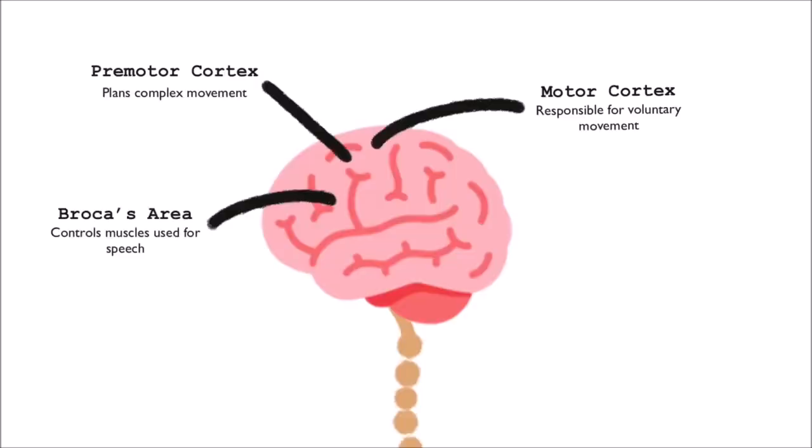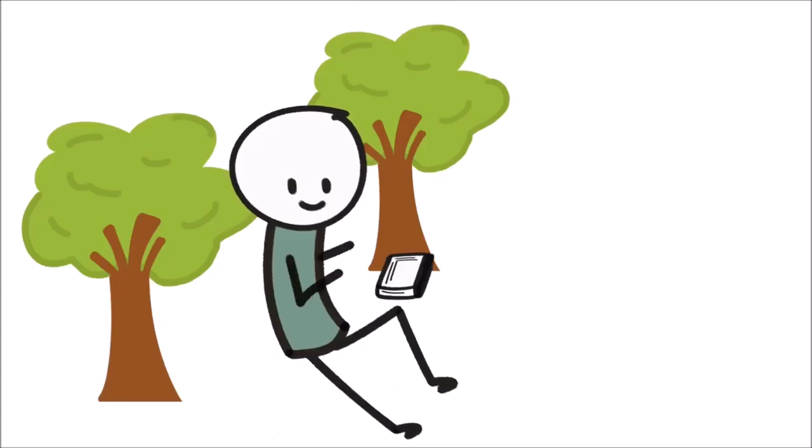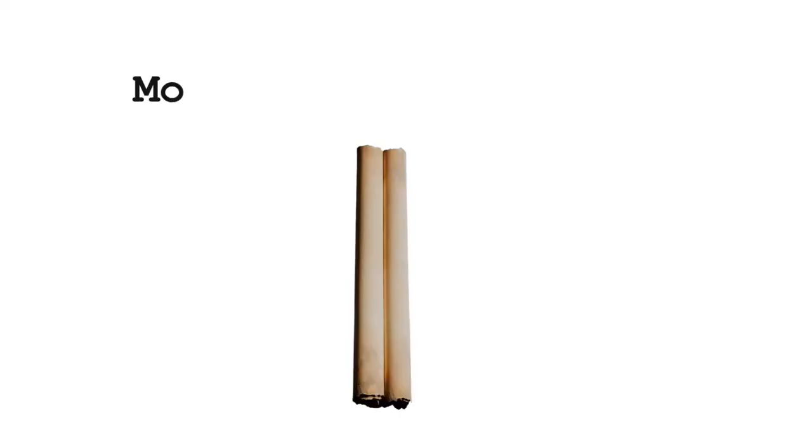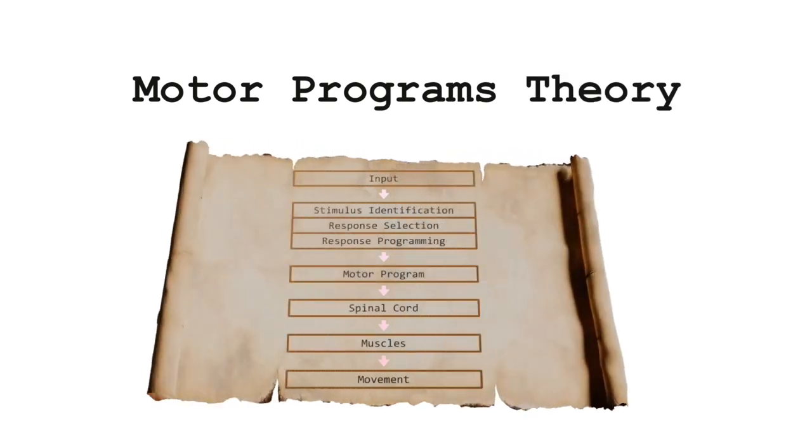Although many parts of the brain are involved in movement control, much of our movement coordination occurs below the level of the brain at the spinal cord, allowing us to perform quick, discrete movements. The solution to the degrees of freedom problem is explained by Richard A. Schmidt's theory on motor programs.